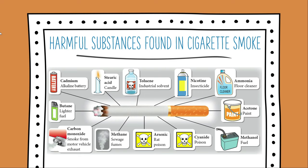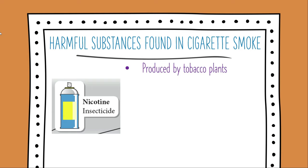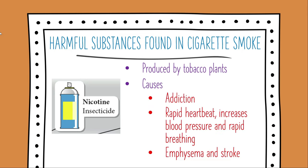The diagram shows harmful substances that may be found in cigarette smoke. Have you heard about nicotine before? Nicotine is produced by tobacco plants that are used in cigarettes. Nicotine causes addiction in smokers. It also causes rapid heartbeat, increases blood pressure, and rapid breathing. In the long term, nicotine may cause emphysema and stroke.